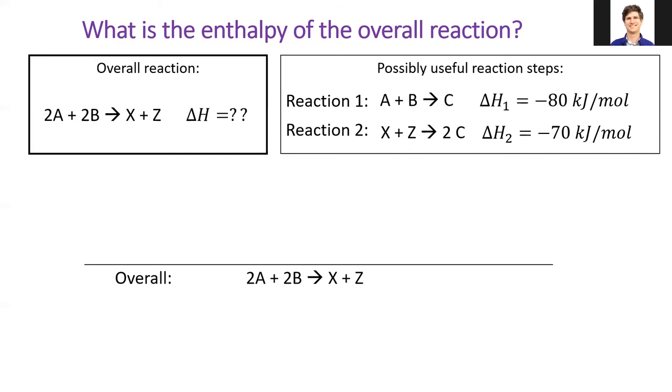Our goal is to construct the overall reaction in the box on the left by manipulating the individual reactions from the box on the right. There are many correct ways to get the answer, but the way I do it, I start by noticing that reaction 1 has an A and a B as a reactant, and my overall reaction needs two A's and two B's as reactants.